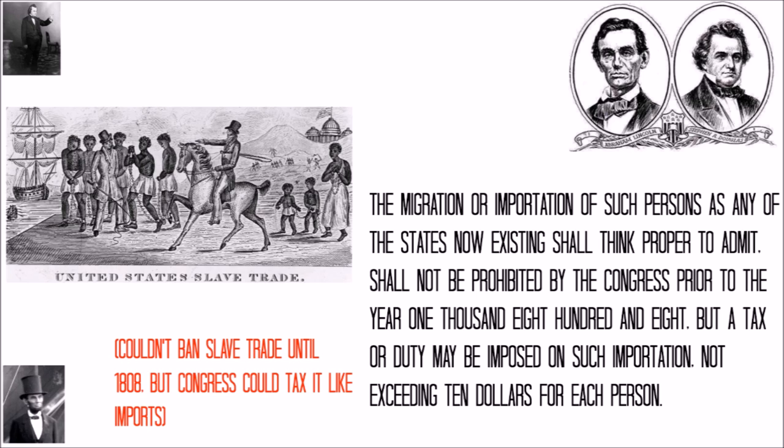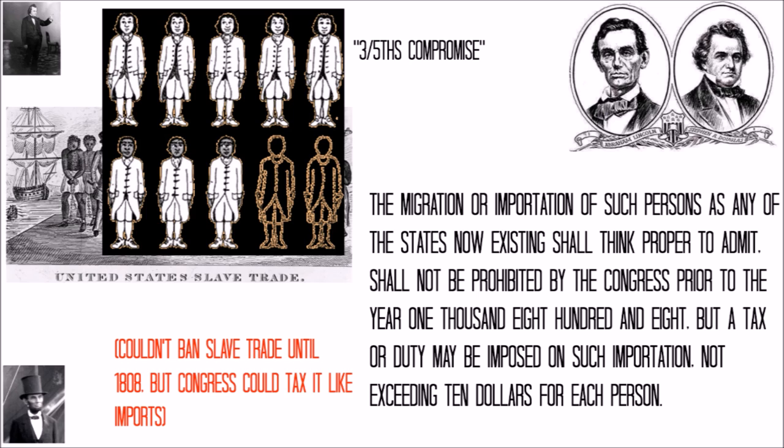The three-fifths compromise determined that during census counts, slaves would be considered three-fifths of a person rather than being ignored totally. Ironically, this gave southern slaveholding states more representation in Congress, as the number of members in the House of Representatives is determined by population. And so began the Great Split.